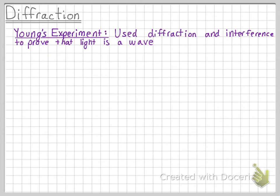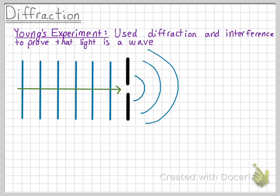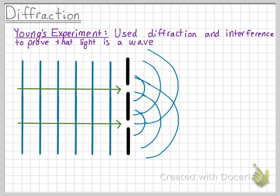Thomas Young in 1801 used diffraction and interference to prove that light is a wave. His experiment is also known as the double slit experiment. We already discussed how one wave will diffract around an opening, but if you place a second opening and send in one wave, we end up with two diffracted waves of the same frequency, which will result in a standing wave that has nodes and antinodes.